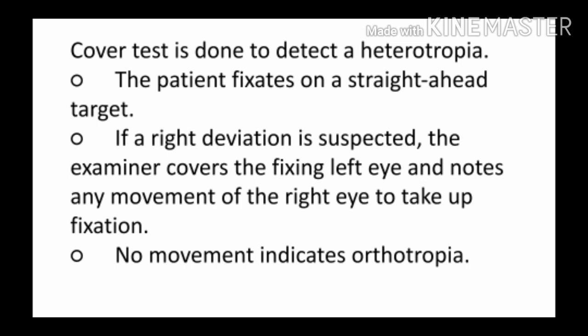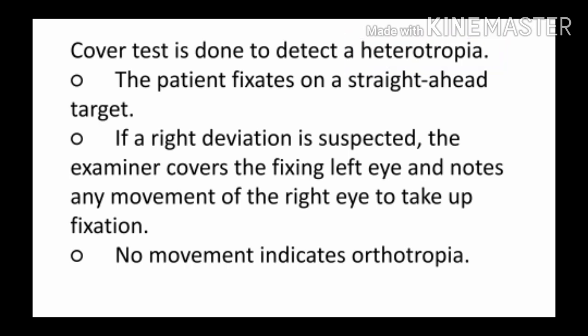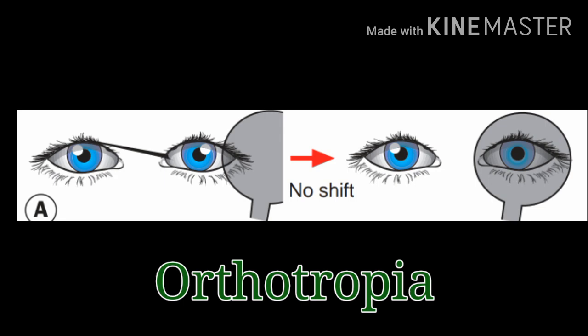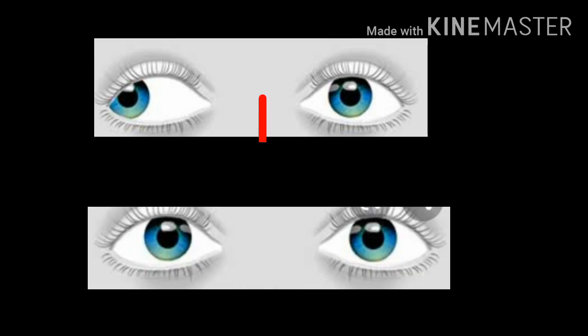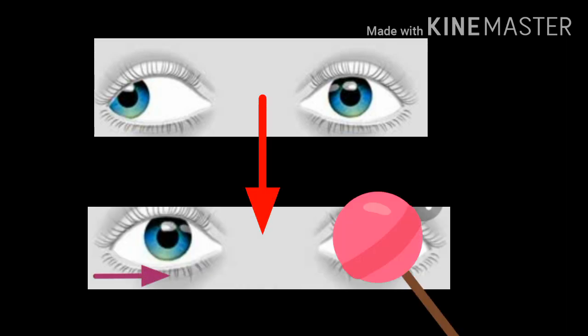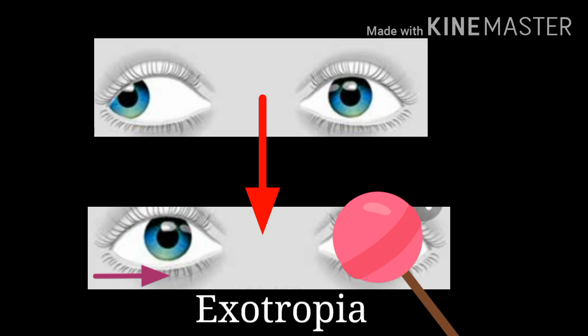The cover test is done to detect heterotropia — manifest squint, which is visible. First, ask the patient to fixate on the target. If the deviation appears to be in the right eye, occlude the fixing left eye and observe the uncovered right eye. If the right eye shows no movement on covering the left eye, the visual axes are properly aligned — this is called orthotropia. If the right eye deviates nasally, it means it was already deviated outward, and on covering the left eye it moved nasally to take fixation — this is exotropia.